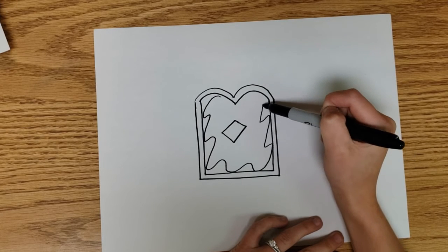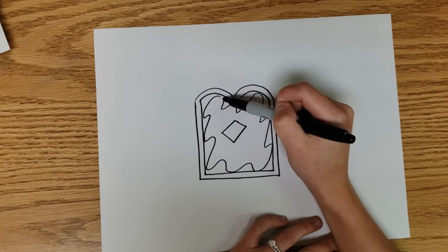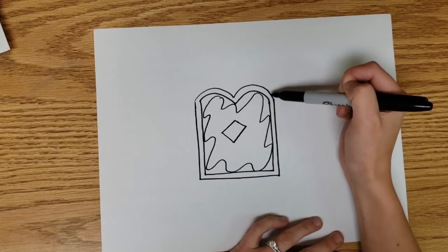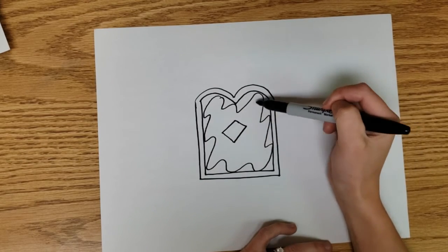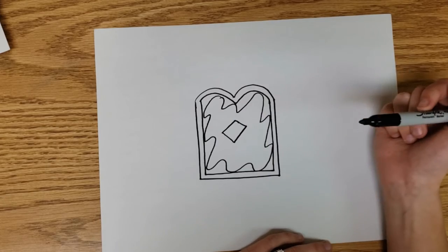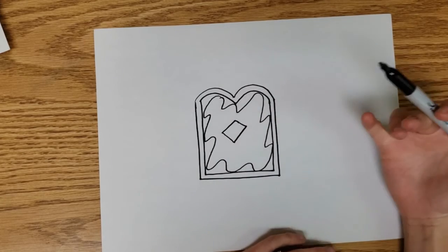And I just made some wavy lines kind of like in a big square to connect it. That shows that the butter is spread. That could also be jelly or other things you put on your bread at Thanksgiving.